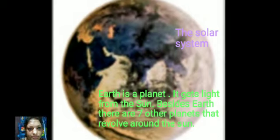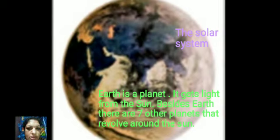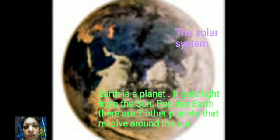What is there in the solar system? Not only stars and planets, but also satellites, asteroids, and dwarf planets are included in our solar system. Our Earth is a planet — that means the Earth revolves around the Sun and receives light from the Sun. It does not have its own light. Besides Earth, seven other planets revolve around the Sun.